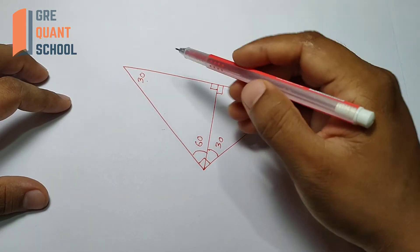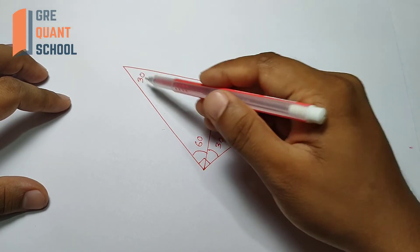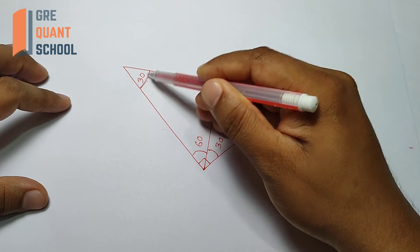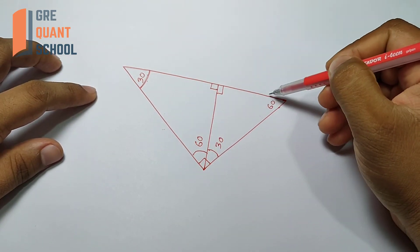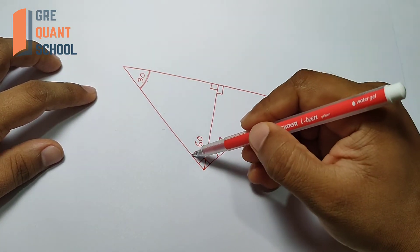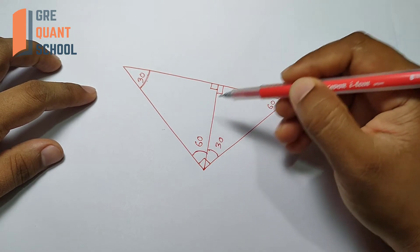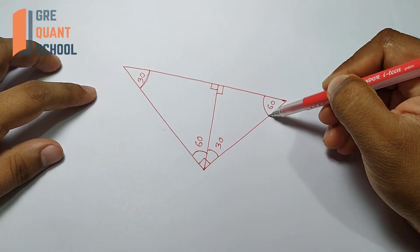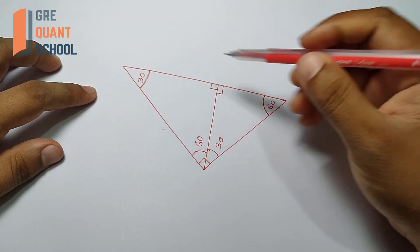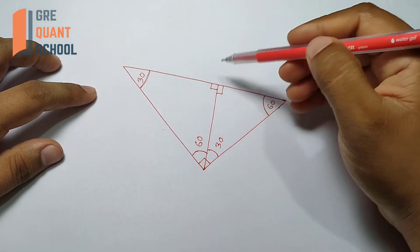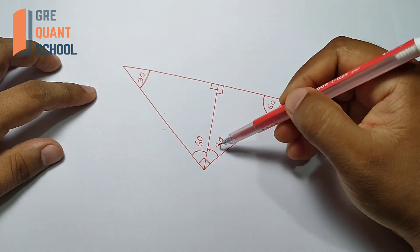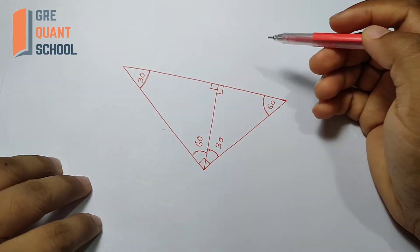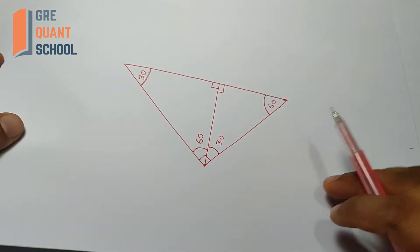Now we have to solve for x. Until we find the angle, we have to set x equal to 0. If we are at x equal to 2, then x equals 0. The x values are equal to 0.